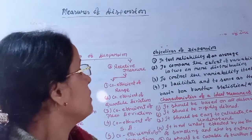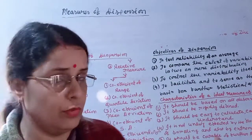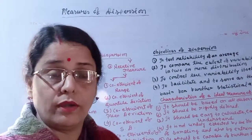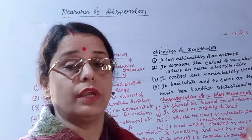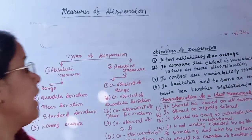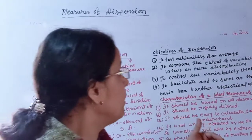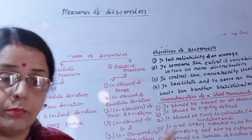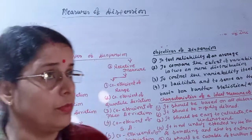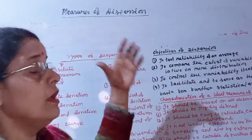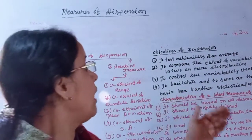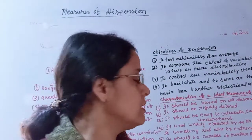We need to compare the extent of variability in our distributions. The purposes of measuring dispersion include controlling variability and facilitating further statistical analysis, serving as the basis for advanced statistical work.